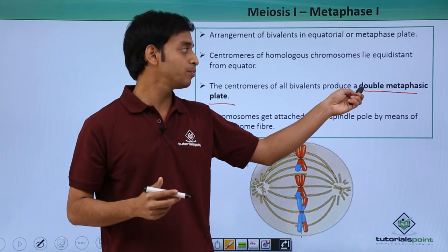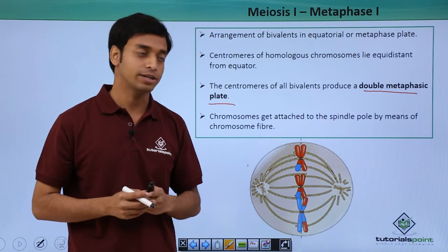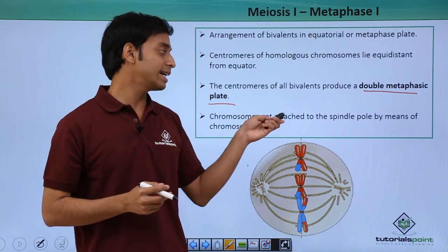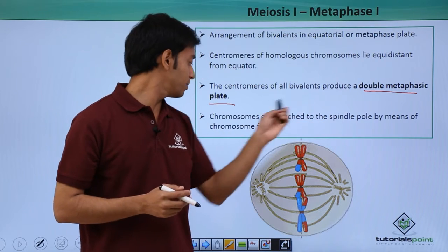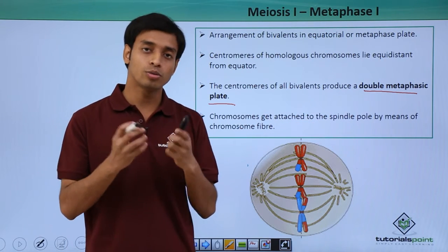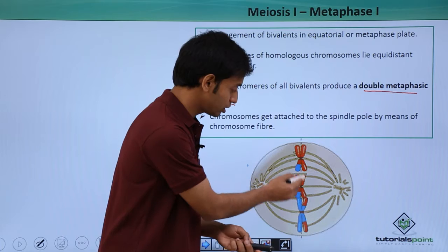The chromosomes get attached to the spindle poles by means of chromosomal fibers. As you can see over here, these chromosomes are attached at the centromere position with the help of chromosomal fibers.